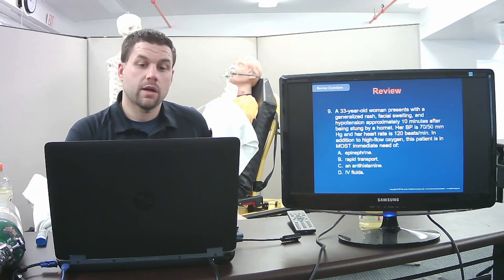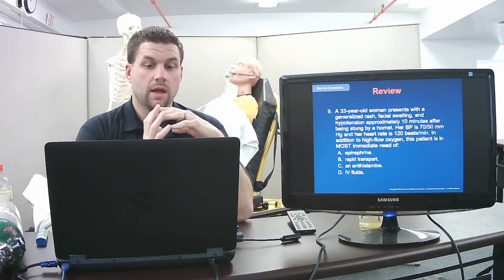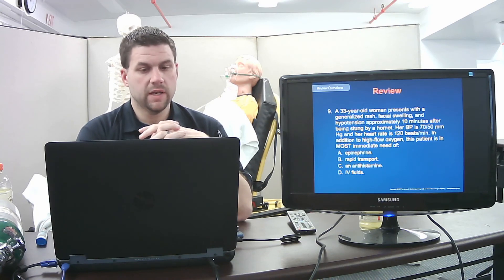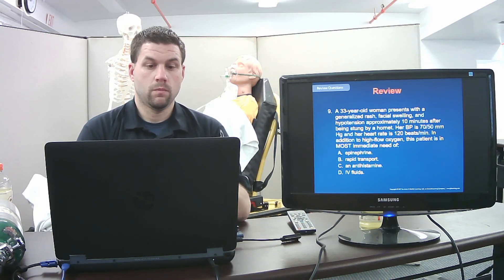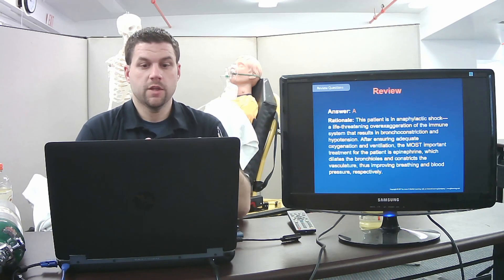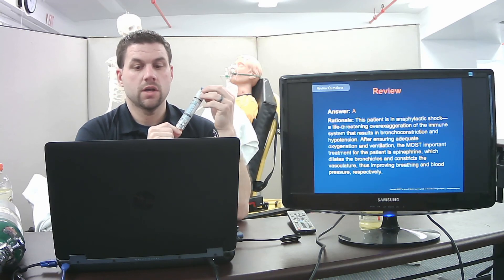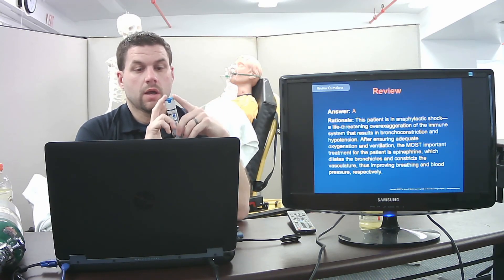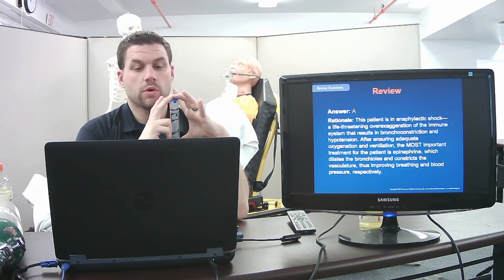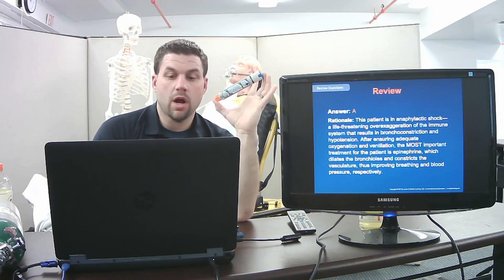A 33-year-old woman with generalized rash, facial swelling, and hypotension approximately 10 minutes after a hornet sting — BP 70/50, heart rate 120 — in addition to high-flow oxygen, this patient most immediately needs epinephrine. The patient is in anaphylactic shock: a life-threatening exaggeration of the immune system causing bronchoconstriction and hypotension. After ensuring oxygenation and ventilation, epinephrine is the most important treatment — it dilates bronchioles, constricts vasculature, and improves breathing and blood pressure.